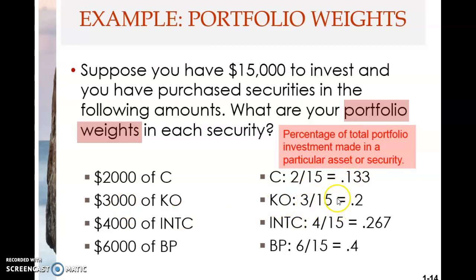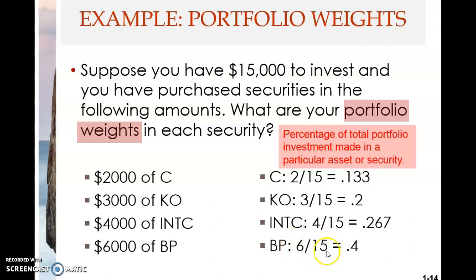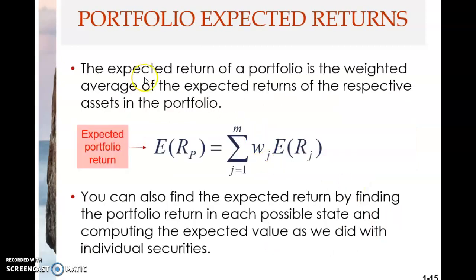The portfolio weight for stock KO is $3,000 over $15,000, which simplifies to 1/5 or exactly 20%. The portfolio weight for INTC is $4,000 over $15,000, and for stock BP it is $6,000 over $15,000, equivalent to 2/5. It is best to use the exact fraction rather than the rounded decimal. So roughly 13.3% of investment is in C, 20% in KO, 26.7% in INTC, and 40% in BP.